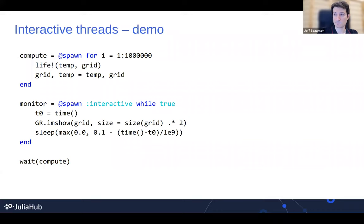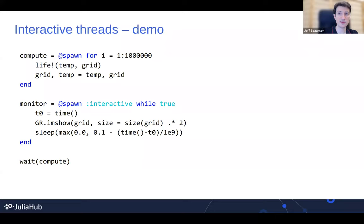Does 1.9 allow improved developer experience in IDEs like VS Code — static analysis, etc.? I know recently there have been some good features in VS Code itself — things like linting information and doing integrated profiling in the IDE. But I'm not sure if those are 1.9 specific. I don't know if that's really new in 1.9 itself.